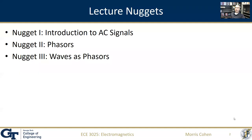This lecture is divided into three nuggets. In the first, I'll introduce what we mean by AC signals and why they are different from the instantaneous DC signals we considered before. Then we'll introduce the concept and the math behind phasors. And finally, in the last part, we're going to recast the idea of a wave as a phasor in a frequency domain mindset.